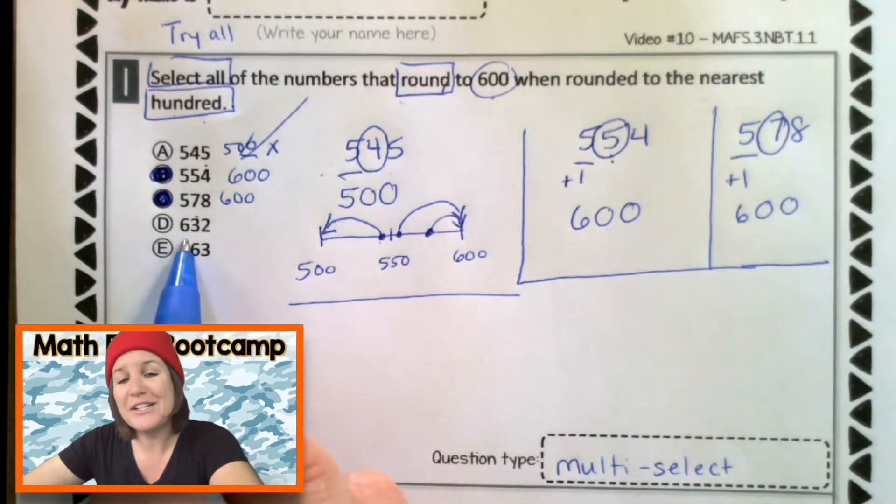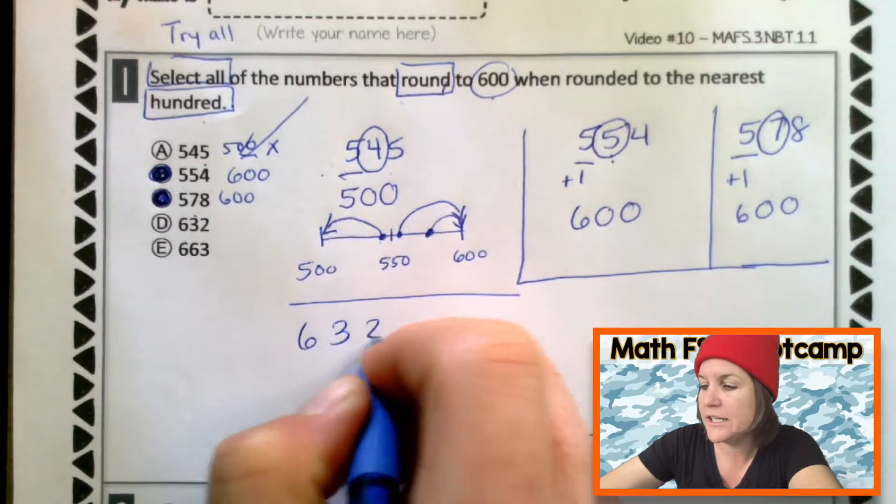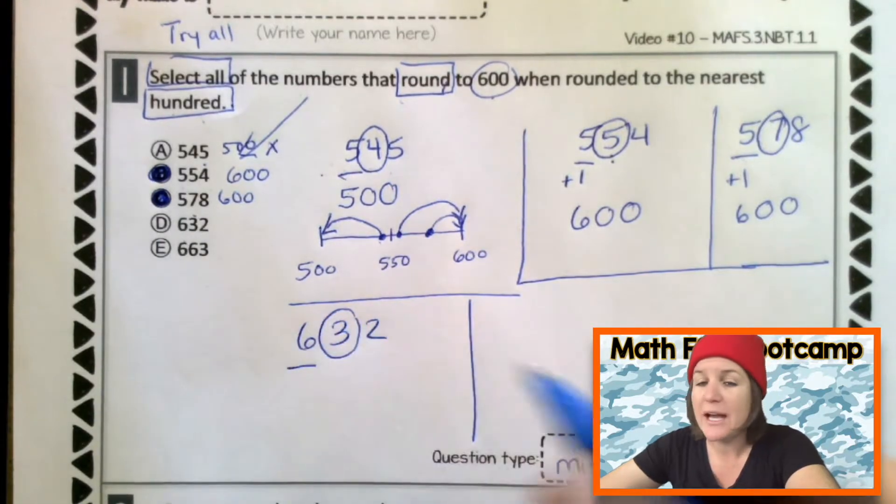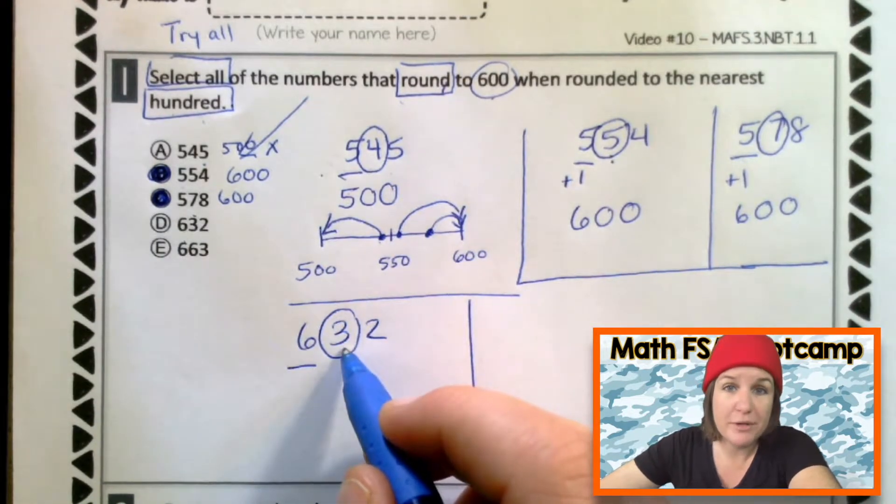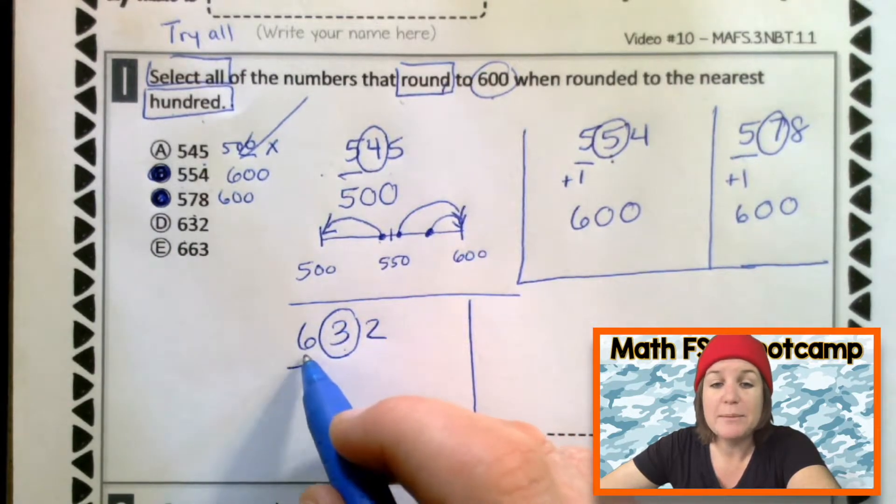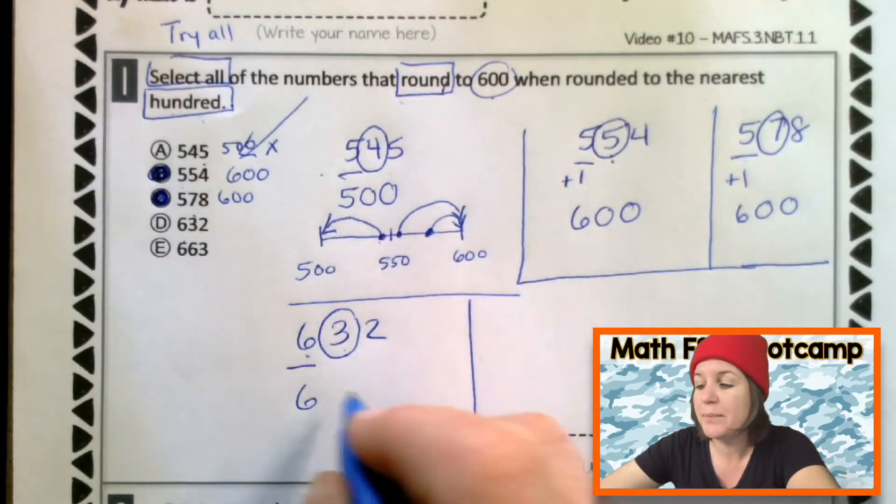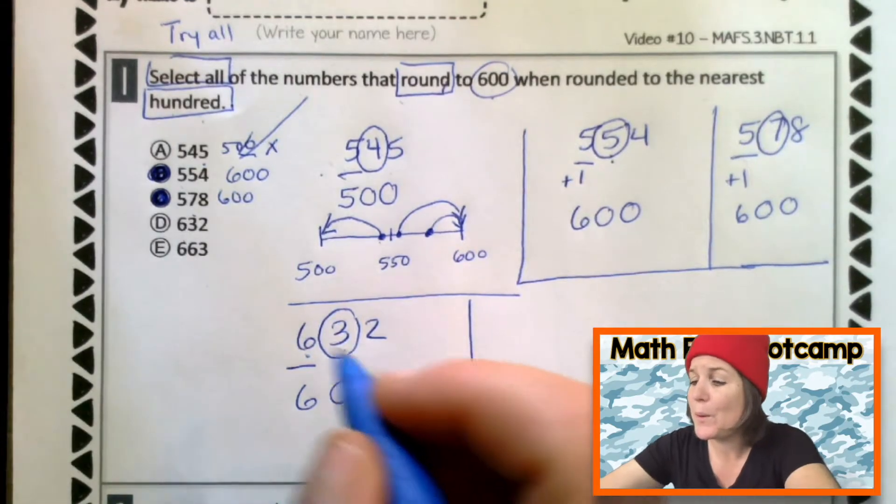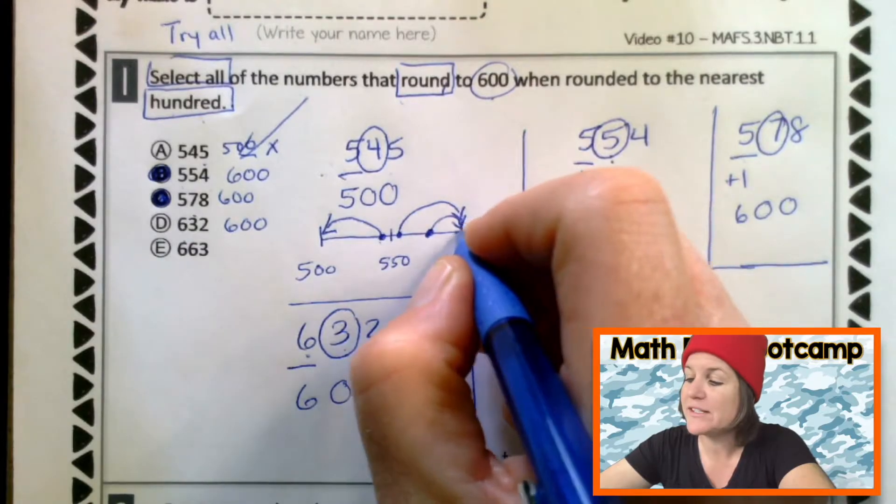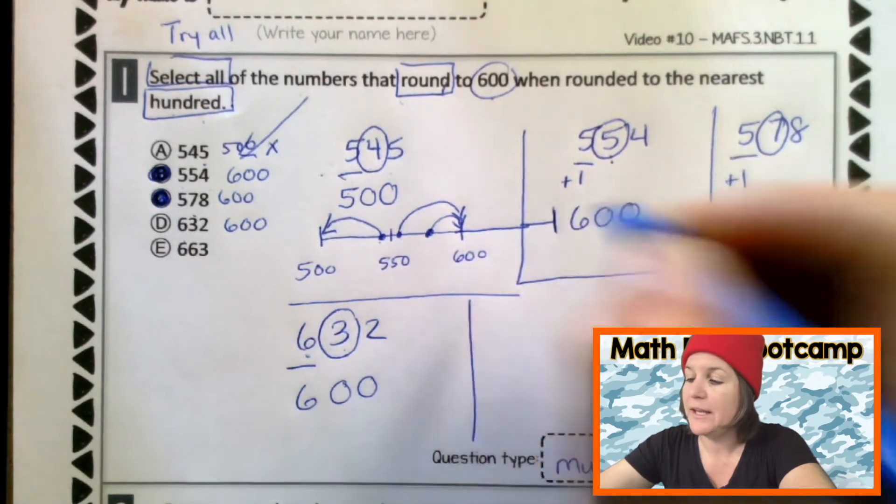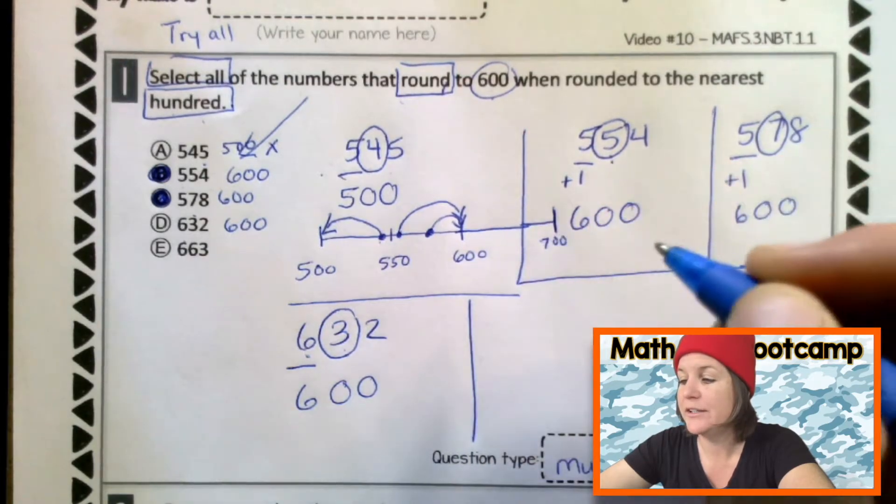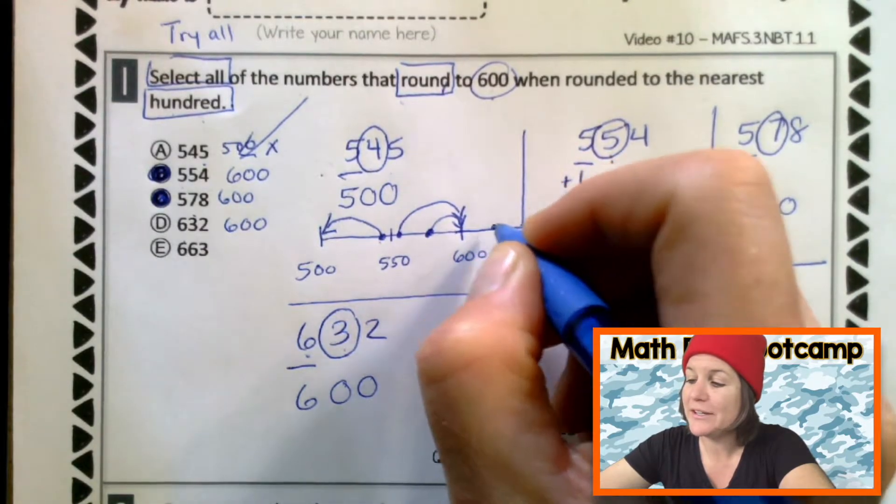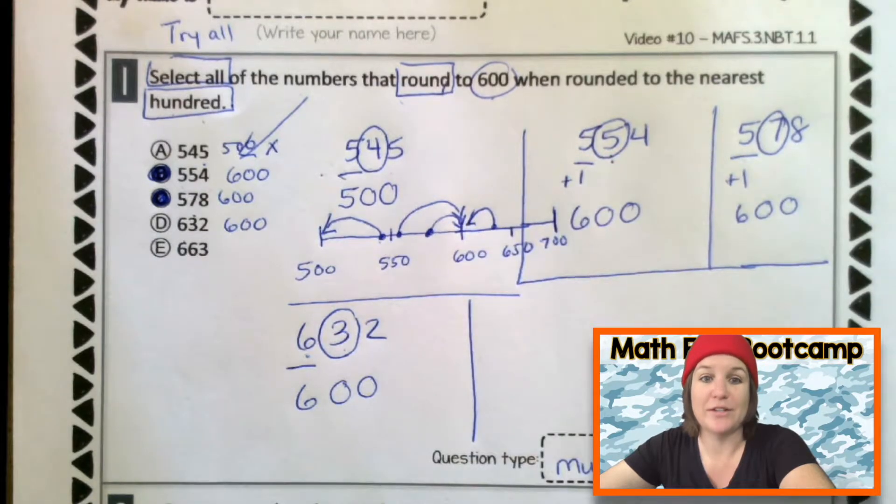Let's try 632. Boom. When you round find and underline the place. Spotlight to the right, decide the digits fate. This is the digit 3 in the tens place. Which means that we are going to keep it the same. Keep our 6 the same. Everything after becomes zero. Check me out now. I'm a rounding hero. 600, which is what we want. And that makes sense because if we extended our number line and made this to 700, this would be 650. And 632 would be about right there. So, it makes sense that we round it back to 600.